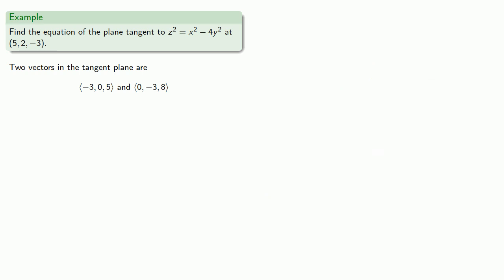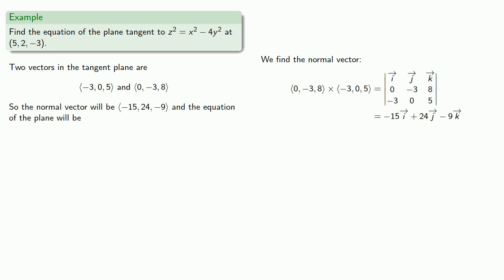And now that we have two vectors in the tangent plane, we can find the normal vector by taking the cross product. And once we have the normal vector and a point in the plane, we can write the equation for the plane.